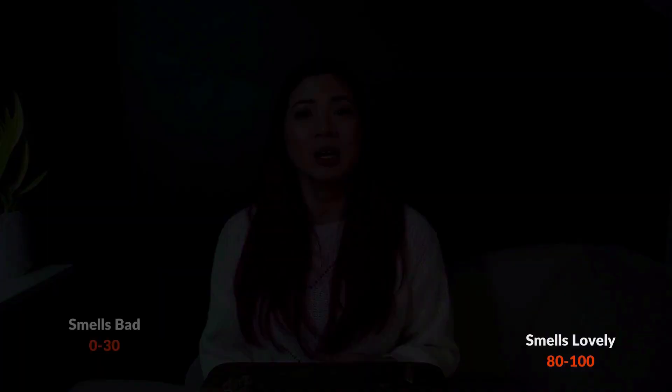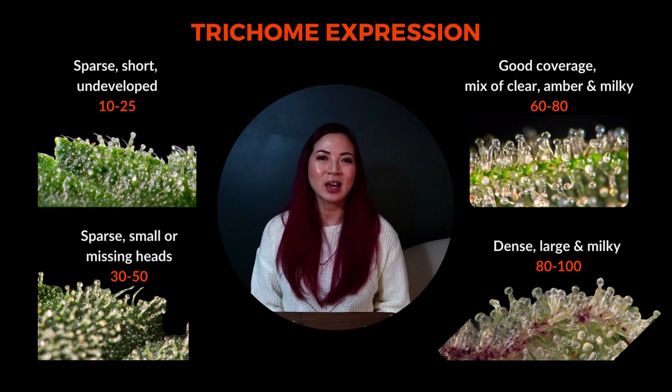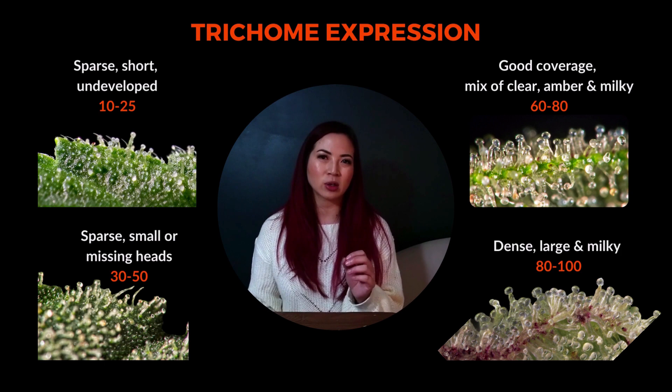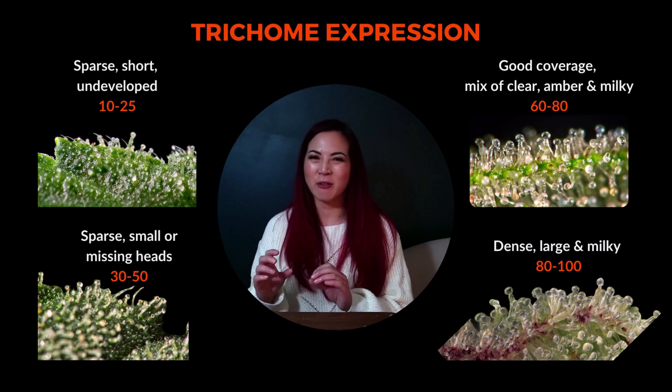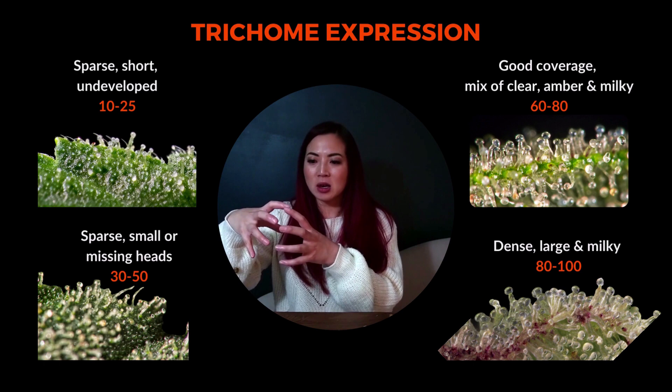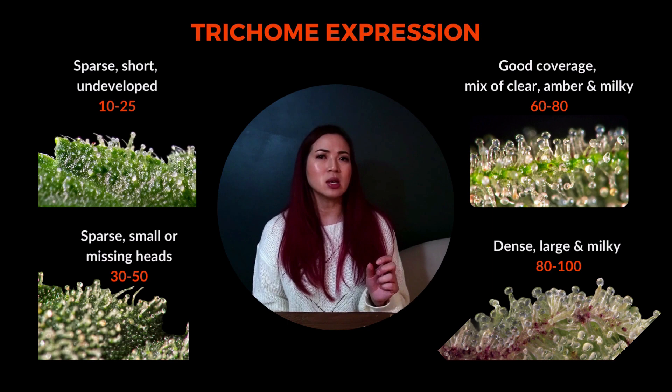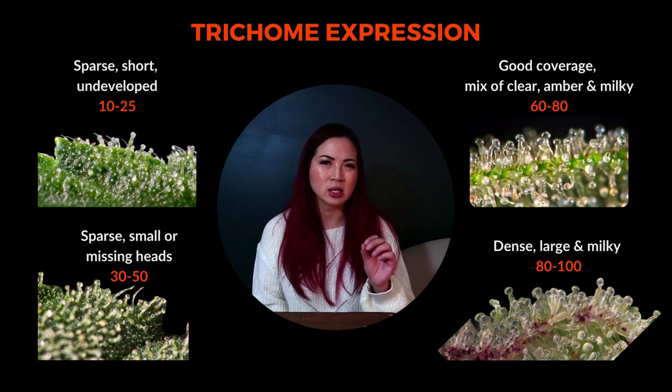Trichome expression — that's another way of saying how caked the bud is in its crystals. When considering trichome expression, you're looking for the density and also the health of the trichomes. Excellent trichome expression is when you see a dense winter-wonderland forest of trichomes — mushroom heads that are tall and big, with trichome heads that look like their bubbles are about to burst. I love it when you can see the milkiness; it's opaque. Poor trichome expression is when you see sparse trichomes that are small, short, and very clear — translucent. Trichomes that are a little dark on the red side are acceptable, but I'd rather see milky white trichomes than amber trichomes.